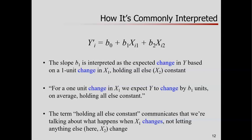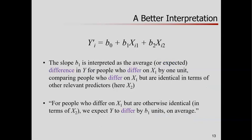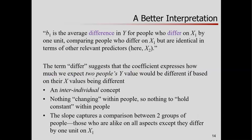Again, I don't think that's the best interpretation. I think a better one is to say, in the multiple regression case, the slope b1 is the average or expected difference in y for people who differ on x1 by one unit or one point, but are identical in all other terms. That is, think about people who are the same on x2, and these two people differ by one point on x1. What would we expect their difference to be on y?